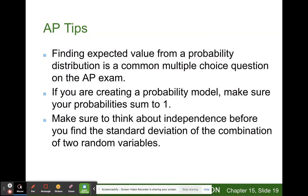For the AP exam, finding the expected value from a probability distribution is a common multiple choice question. Everything that you do in this chapter, make sure you could do it in the spring. If you are creating a probability model, make sure that your probabilities sum up to one. That's the best way to figure out if you're doing the right thing. Take all the probabilities, add them up. This should equal one. Make sure to think about the independence before you find the standard deviation of the combination of two variables. That's important.